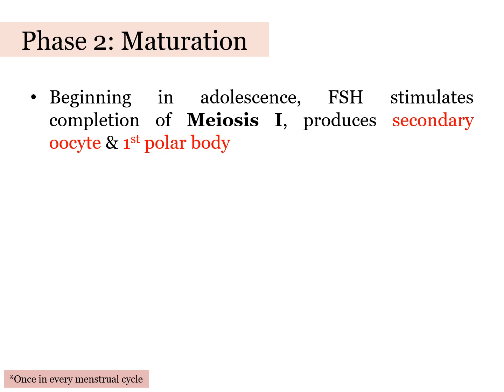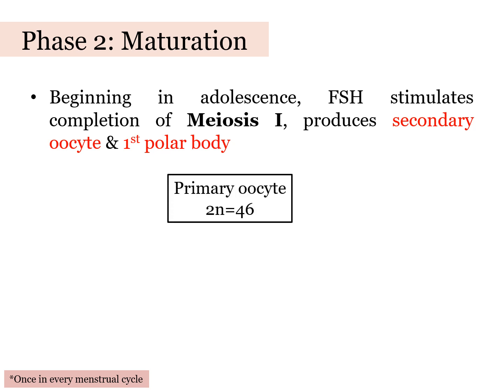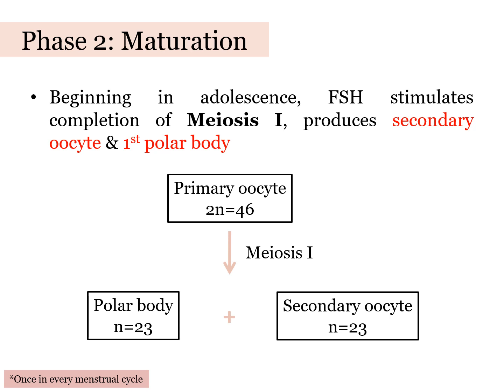Oogenesis is now resumed with the second phase, which is maturation. This is triggered by the release of FSH and LH during puberty. As FSH stimulates the growth of the follicles that have been dormant since fetal development, meiosis I is now resumed. As a result of meiosis I, the primary oocytes are transformed into secondary oocytes and a polar body. The polar body will degenerate. This phase takes one menstrual cycle, and therefore secondary oocytes are only produced and released once in every menstrual cycle.